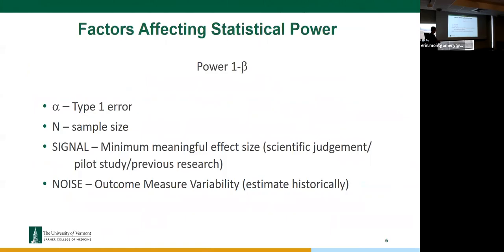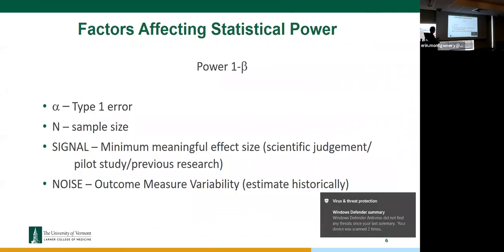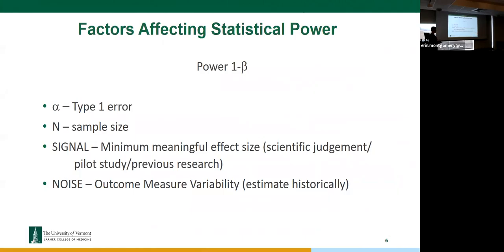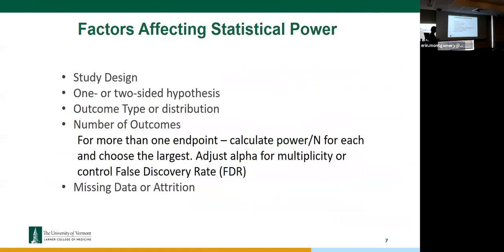Factors that affect statistical power — it's all one big equation. Power is one minus beta, your type two error, and it hangs together with alpha (type one error), your sample size, the signal or effect you're trying to detect, your study design, and the noise — the variation in your data. All these hang together, so tweaking one changes the others, and changing any of them affects the power.